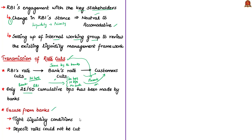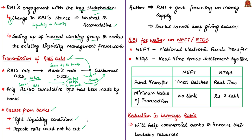The excuse given by commercial banks is that in the last few months, liquidity was very tight and deposit rates could not be cut. The author notes that liquidity has considerably improved in the last week and the new government is focusing on more money supply in the economy. Therefore, the banks cannot give such lame excuses for not passing on the rate cuts fully. The author also welcomes RBI's decision to do away with fees on NEFT and RTGS transactions, but cautions this will have no effect if banks do not pass on the benefit to consumers.